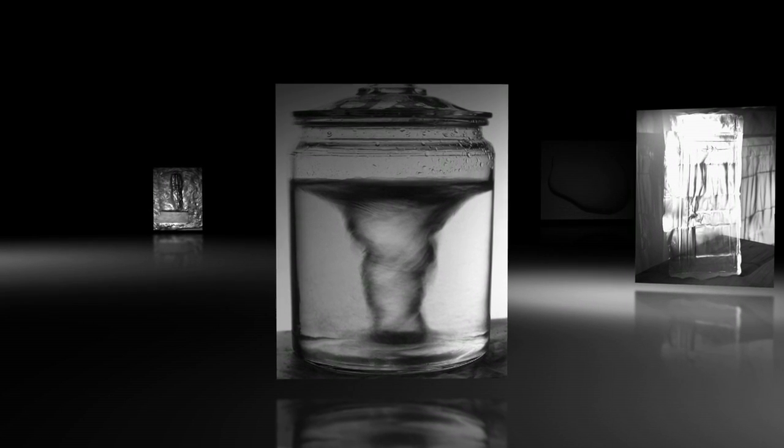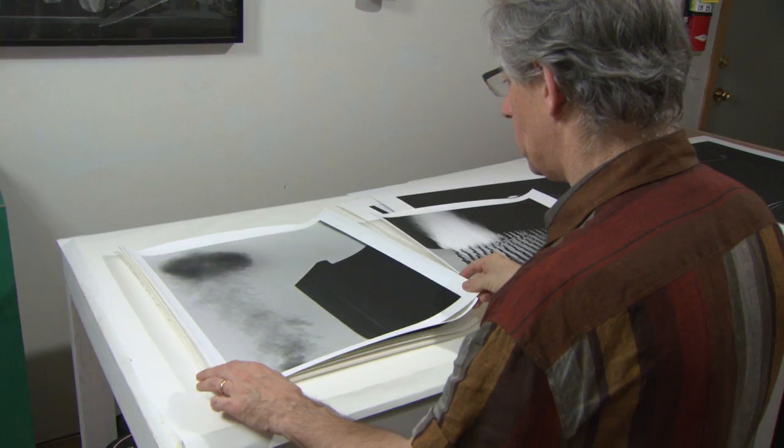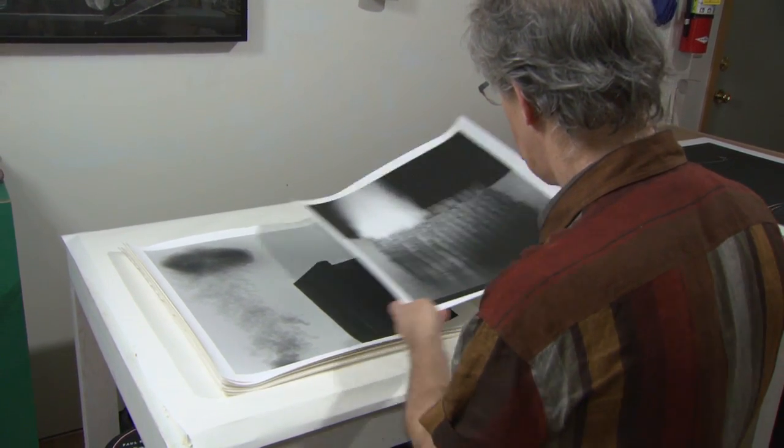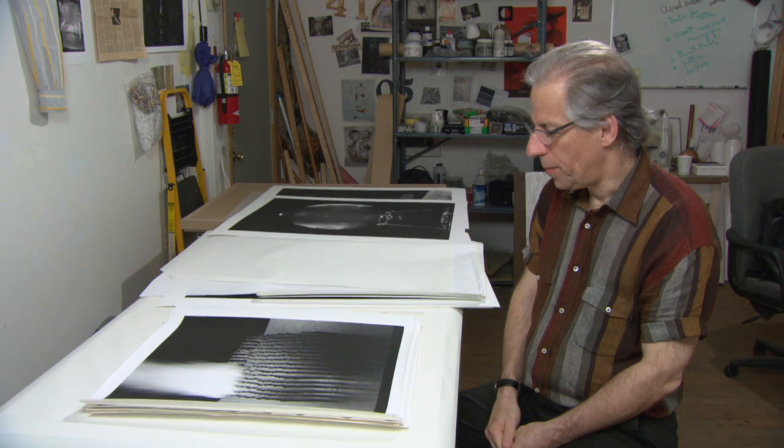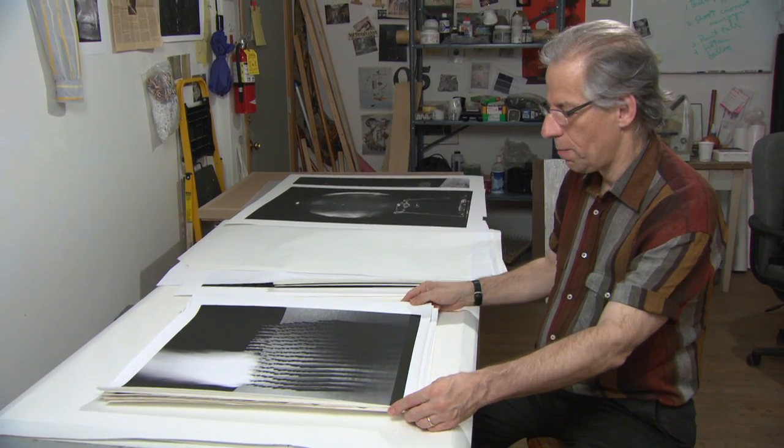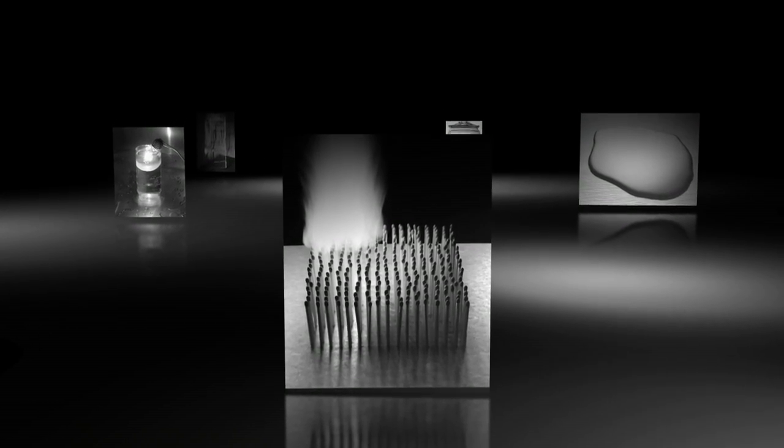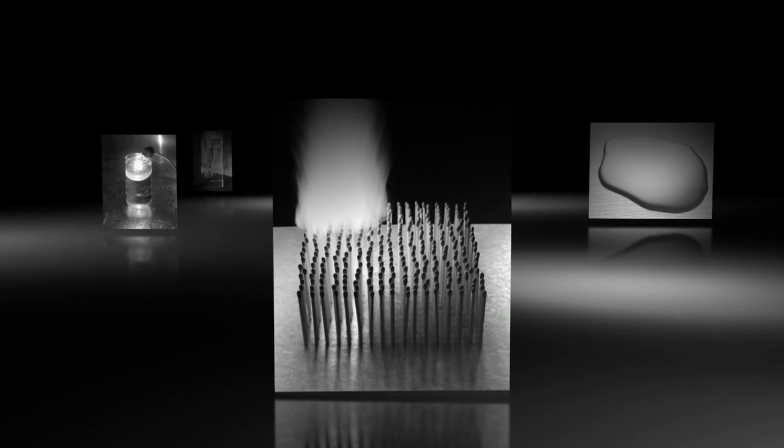What I do is I make things that are like still lifes, and then I photograph them. But the real effort is to refer to the things outside of the frame. We're looking at a grid of about 300 matches, and this is just a moment after I've lit one corner.